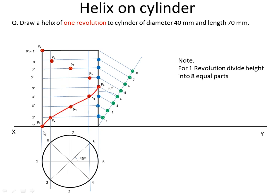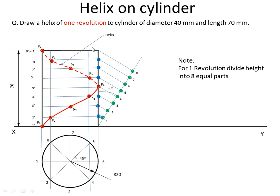Then draw the helix passing through points P1, P2, P3, P4, P5. The remaining portion is drawn as a dotted line because when the thread goes to the back side of the cylinder it is not visible from the front — that's why half the portion is dotted. Give the diameter to the cylinder: the radius is 20 mm. Give the name to the curvature — that is 'Helix'.